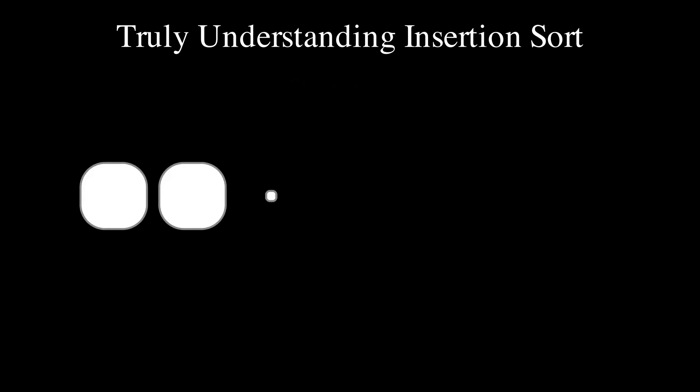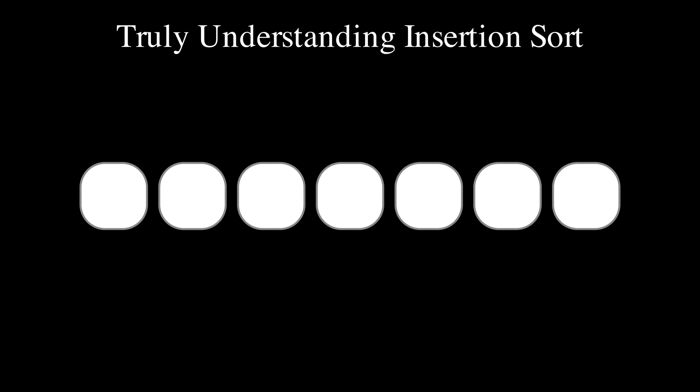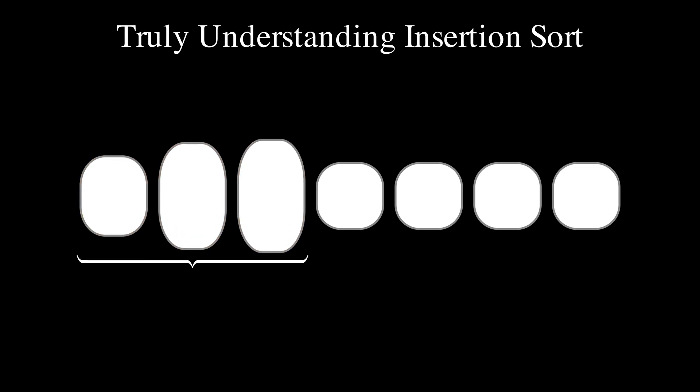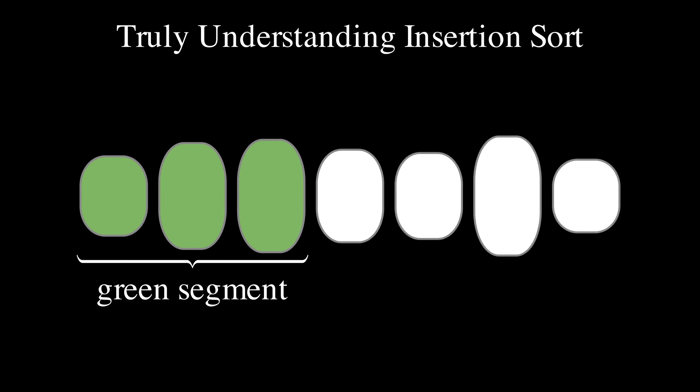Let us understand how insertion sort works. At each step of the algorithm, a prefix of the array is known to be sorted. We call this prefix the green segment. The other elements in the array are in an arbitrary order. The idea is to insert the next element into the green segment at just the right position so that the segment remains sorted.